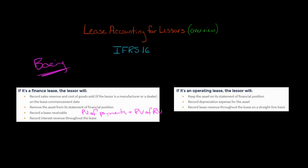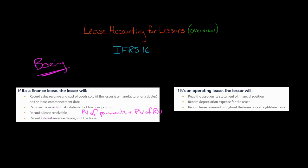The lessor is going to be recording interest revenue throughout the lease, and that will be calculated based on this lease receivable. We're going to multiply the discount rate — the implicit rate of return that the lessor earns on the lease — times the lease receivable. So if the lessor is a manufacturer or dealer, they're going to get two sources of profit.